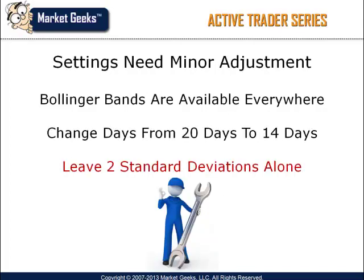The Bollinger Band comes standard on every charting program, online and offline, so you don't have to worry about finding it or calculating it — the hard work is done for you. The settings that John Bollinger, the inventor of the band, recommends are 20 days for the moving average and 2 standard deviations for the upper band as well as the lower band.